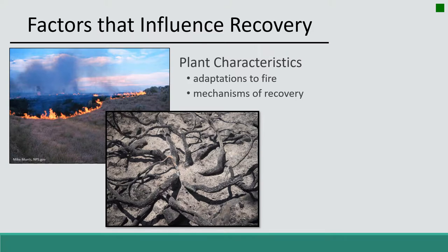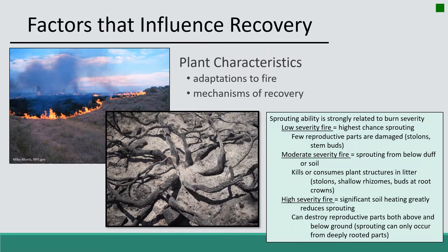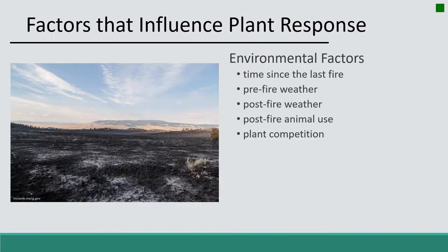A key factor in sprouting is whether root mortality occurred. There is a table comparing low, moderate, and high severity fires relative to sprouting. In a low-severity fire, there is little elevated temperature and little root mortality, so quite a bit of sprouting occurs. In a high-severity fire, much of the soil was heated and root death is likely, so sprouting is not expected in those situations.